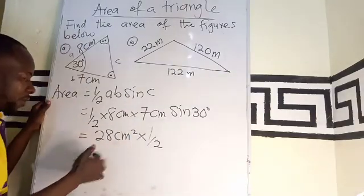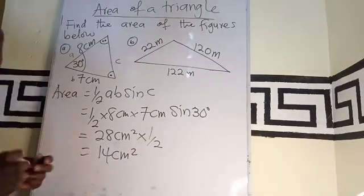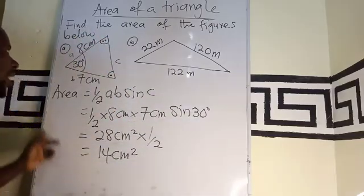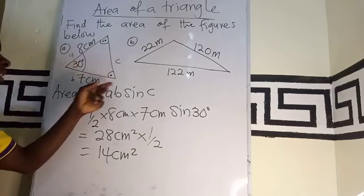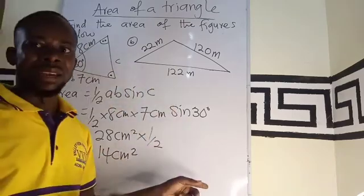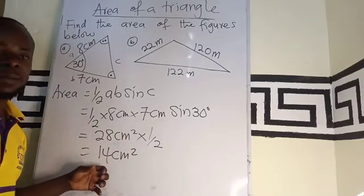And half of 28 is 14 centimeters squared. So if you're asked to find the area of a triangle that has no height but has an angle, and two of the sides are given, make sure the two sides are inclined to provide the angle given to you, then we can use this formula.